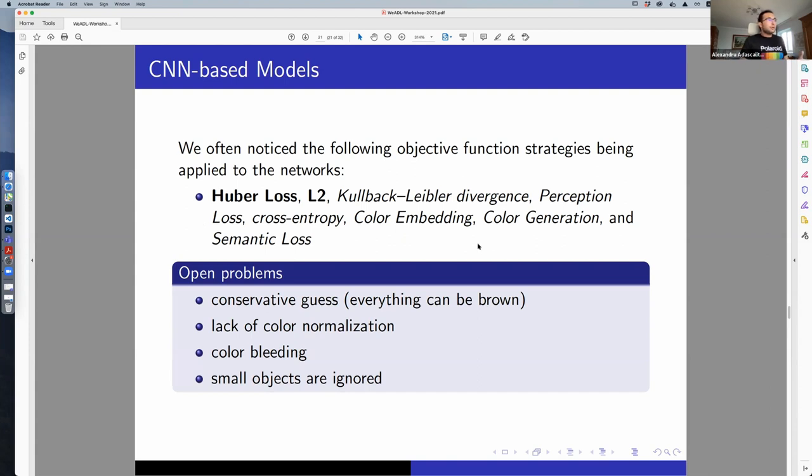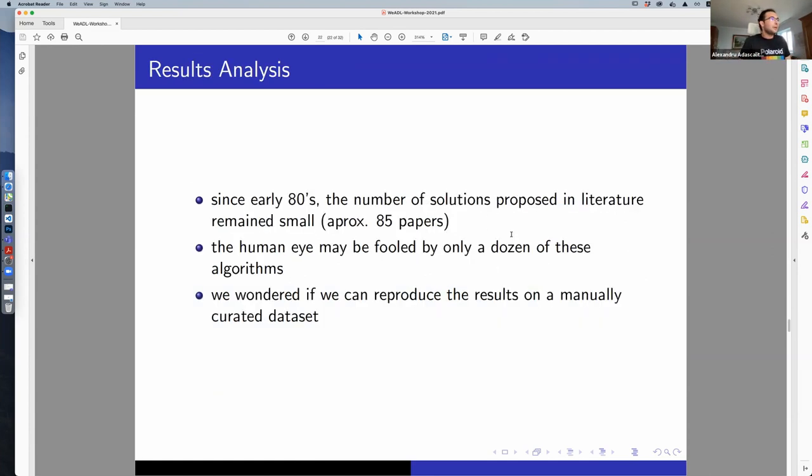Often, people are using Huber Loss and L2, and the open problems are that the guesses are conservative. Let's make everything brown just because it minimizes the loss. Lack of color normalization. I saw pictures of blue sky with yellow parts, but of such a yellow that I guess never in the history of the world the sky was that color. There is color bleeding. Some color extends way outside of the border, and small objects are ignored.